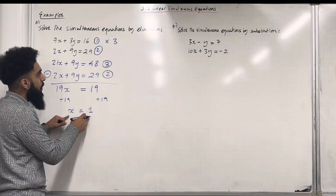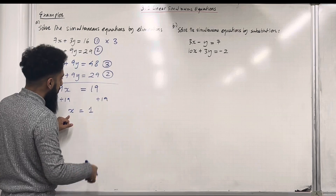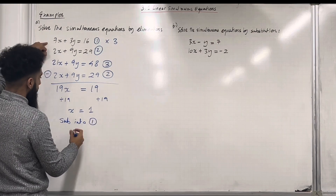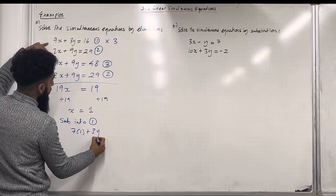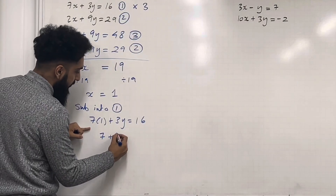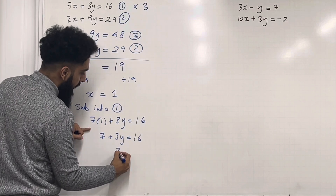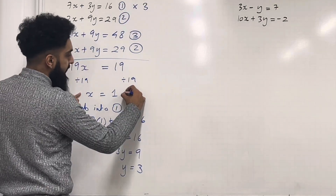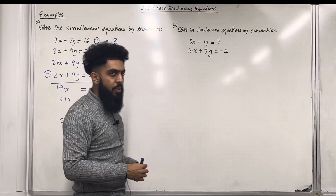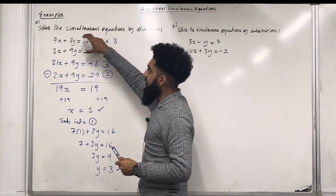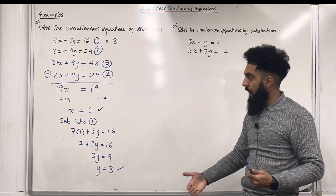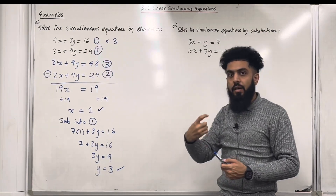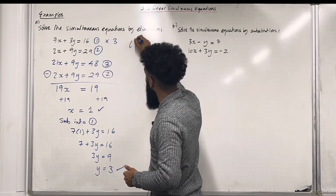The next step is to substitute x equal 1 into equation 1, 2, or 3 — it's up to you. I'm going to substitute into equation 1. So I get 7 multiplied by 1 plus 3y is equal to 16, which gives me 7 plus 3y equals 16. So 3y is equal to 9, hence y is equal to 3. The solutions are x equal 1, y equal 3. These two equations represent the equations of a straight line. The solution x equal 1 and y equal 3 represents the point of intersection between these two lines, so the coordinate of the point of intersection will be (1, 3).